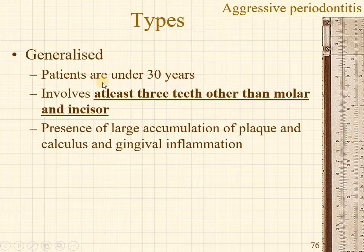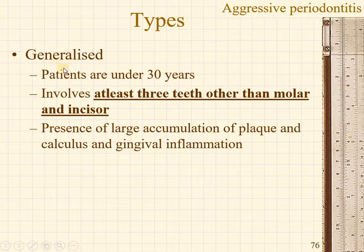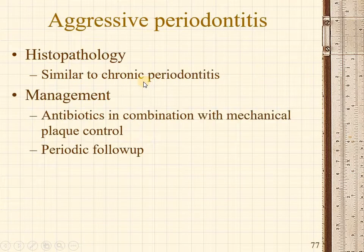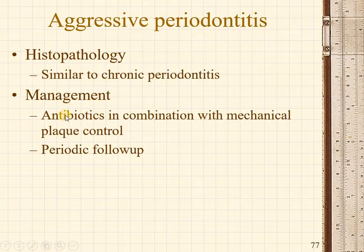There is a typical arc-shaped bone loss around the molars and incisors. Aggressive periodontitis is called generalized when at least three teeth other than the molars and incisors are involved. Large accumulation of plaque, calculus, and gingival inflammation may or may not be present, but is usually seen after a certain stage, typically in patients above age 30. Histopathologically, it is similar to chronic periodontitis with bone loss and excessive inflammation. Stage management includes plaque control with antibiotic coverage, and periodic follow-up is essential.